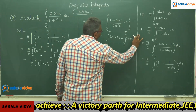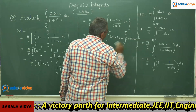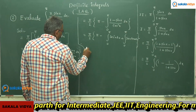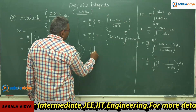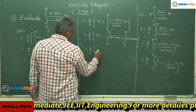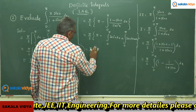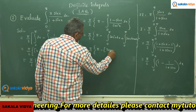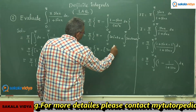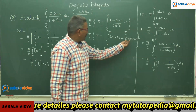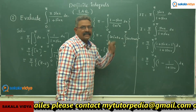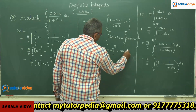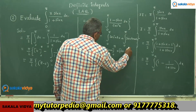So this equals π/2 times π minus [tan x from 0 to π plus sec x from 0 to π]. The integral of sec² x is tan x, and the integral of sec x tan x is sec x, so we get π/2 times π minus [tan x plus sec x] evaluated from 0 to π.